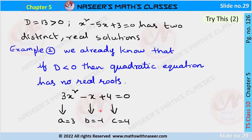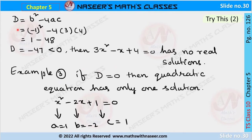Here the coefficient of x² is 3, the coefficient of x is minus 1, and the constant is 4, so a equals 3, b equals minus 1, and c equals 4. The discriminant D equals b² minus 4ac, written as (−1)² minus 4 times 3 times 4, which equals 1 minus 48, giving us minus 47. Since minus 47 is less than 0, the quadratic equation 3x² minus x plus 4 equals 0 has no real solutions.